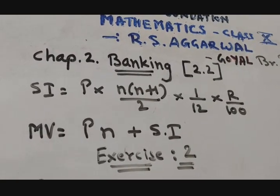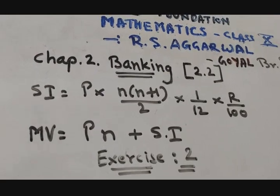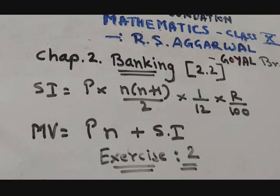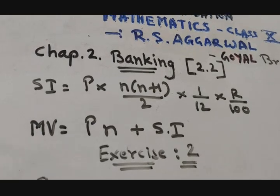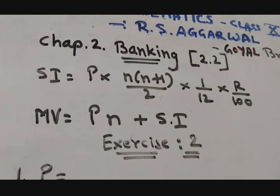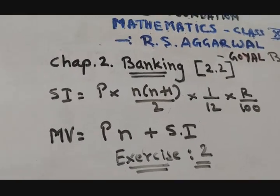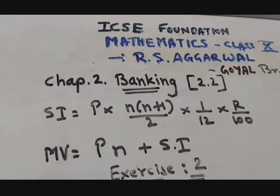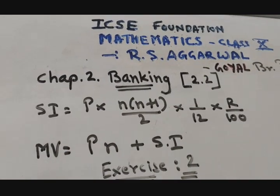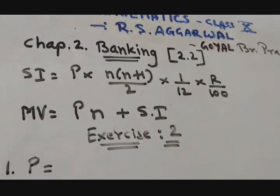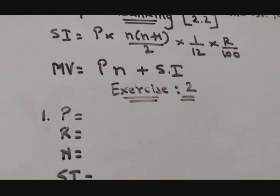And for maturity value, or maturity amount, equals P multiply by n plus simple interest. We are going to start with Exercise 2 of Banking of ICSE Foundation Mathematics Class 10 by R.S. Agarwal, Goel Brothers Publications. We are starting with Exercise 2.